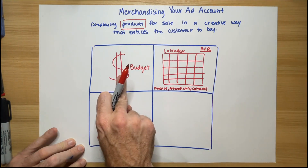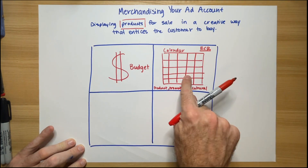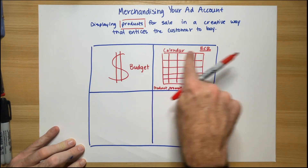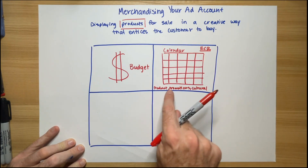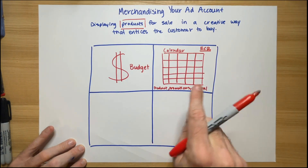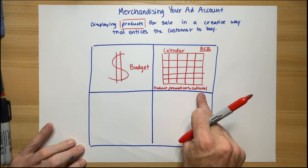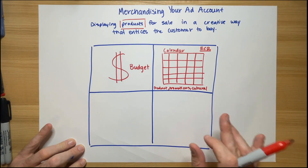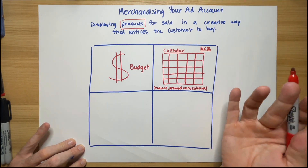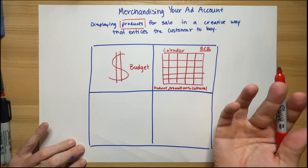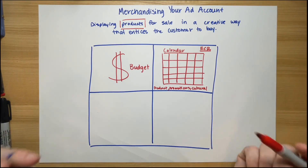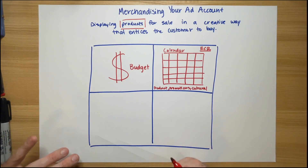So first, define the budget. Second, ask yourself: do I have any moments around product release, promotion, or cultural events? And when I say cultural events, I mean things like back to school, Father's Day, Mother's Day, Valentine's Day — moments that would drive an imperative for purchase and produce outsized returns.